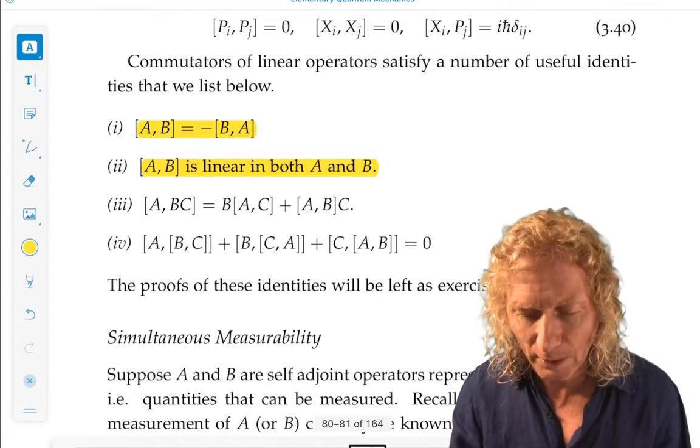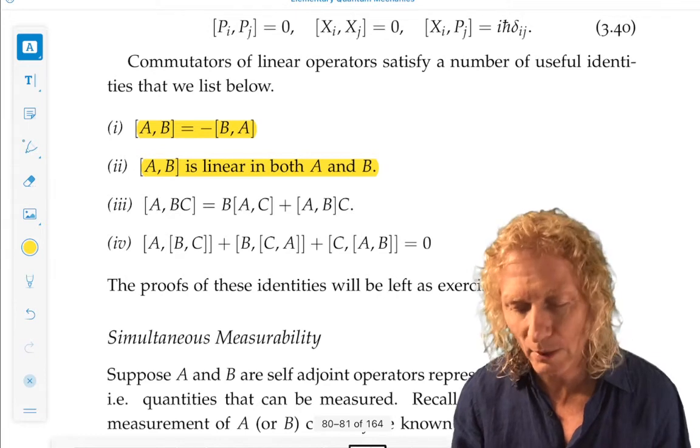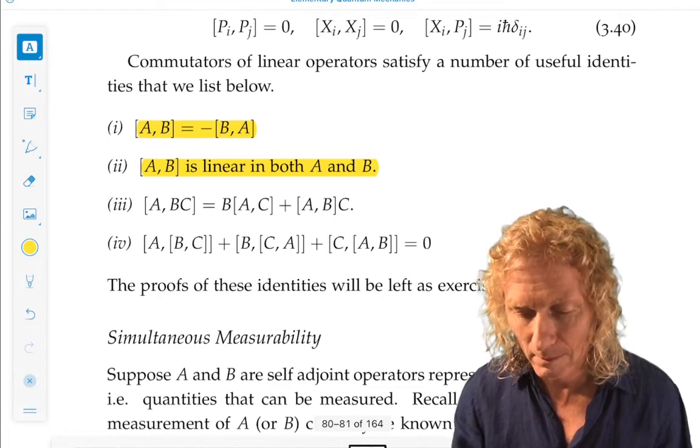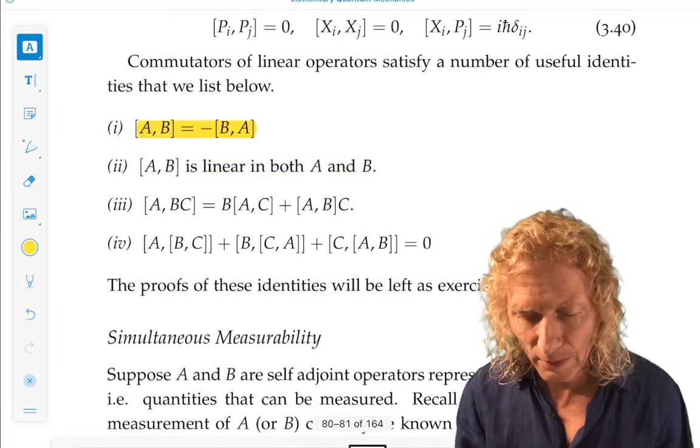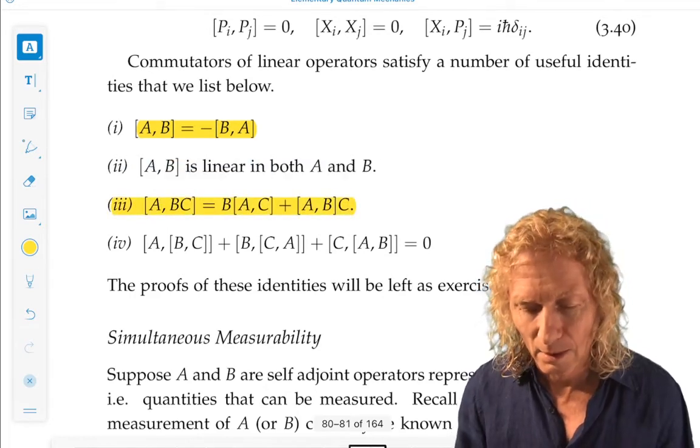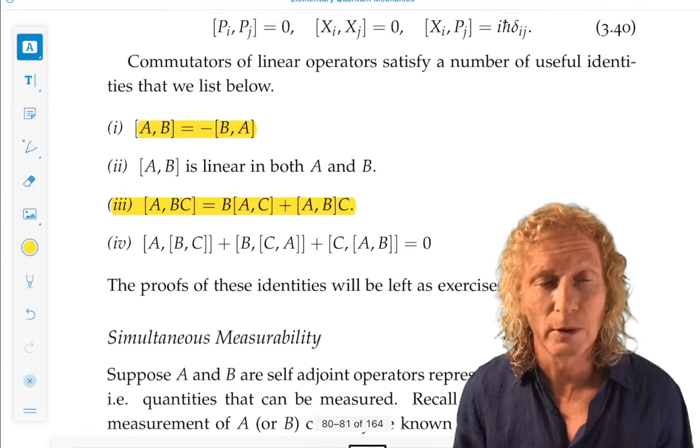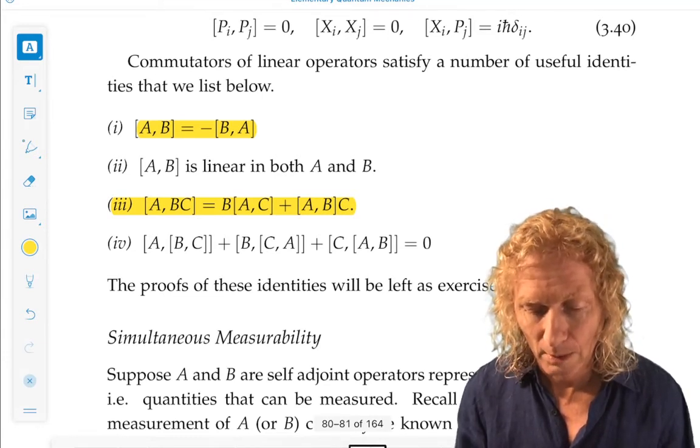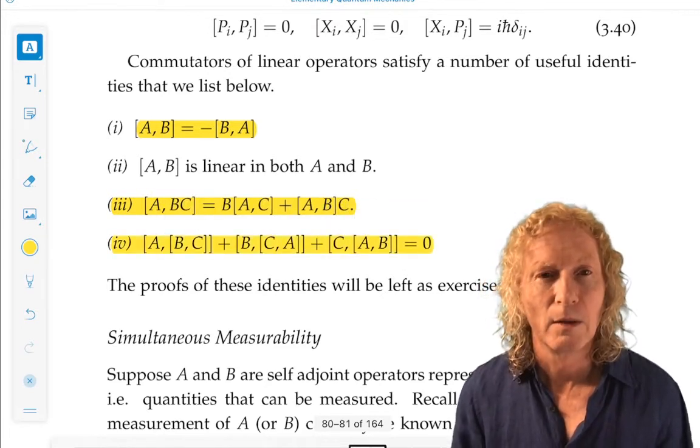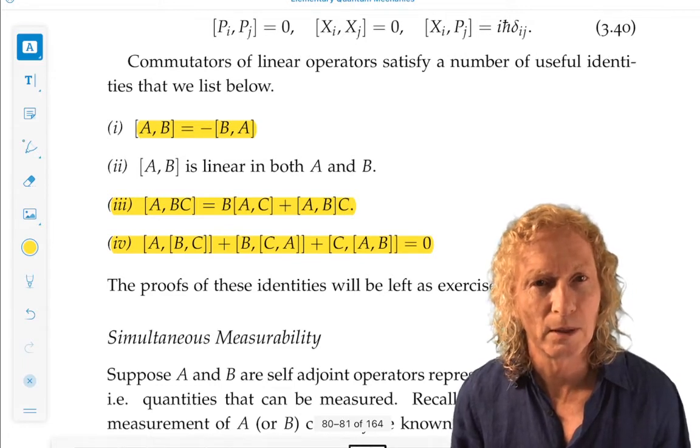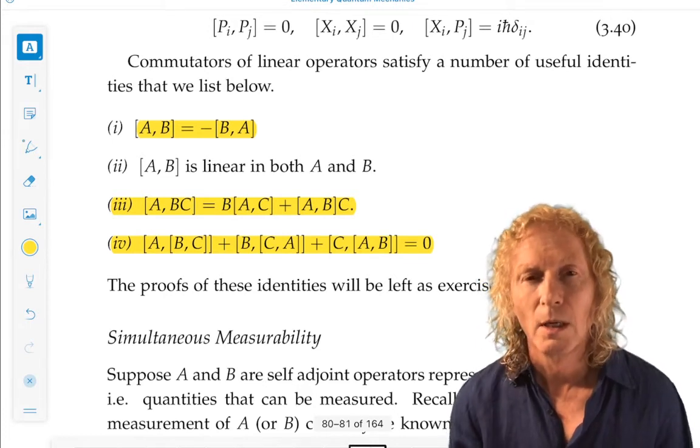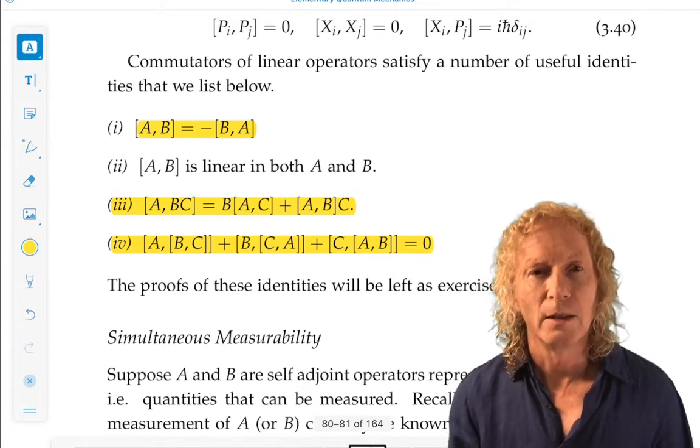That's a good exercise to formulate it in a mathematical way that enables you to use a definition of linearity. Now, this third identity, we're going to use this over and over again. Starting with the harmonic oscillator later on in this chapter. And also, this identity comes up. And we'll see it in particular when we look at angular momentum in the last chapter. I just want to introduce these ideas right now.